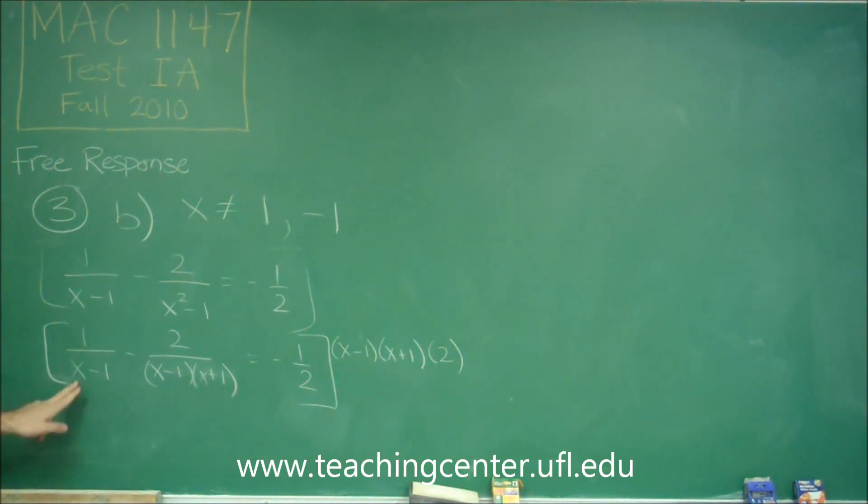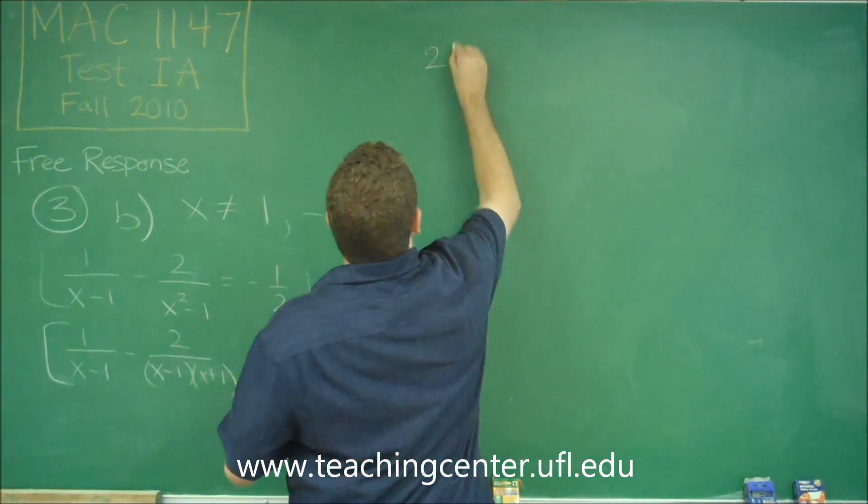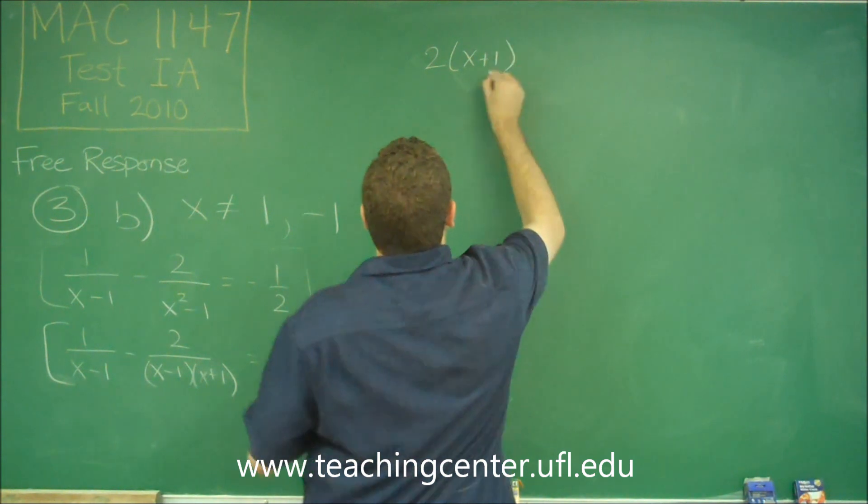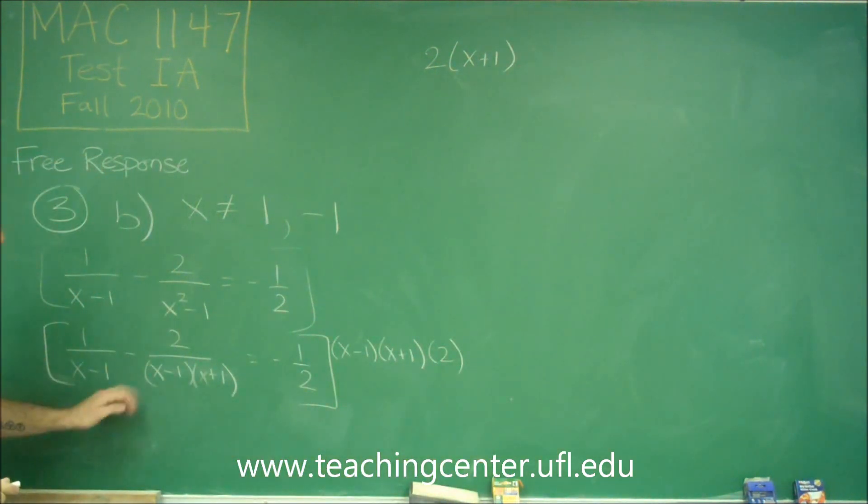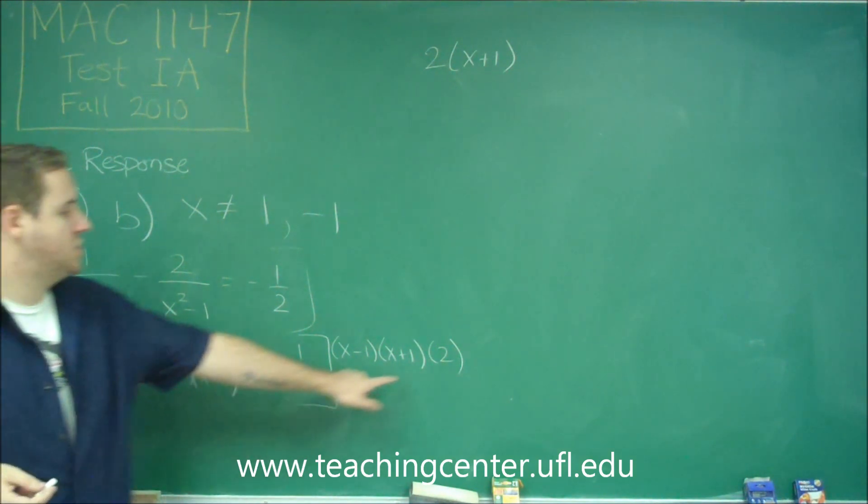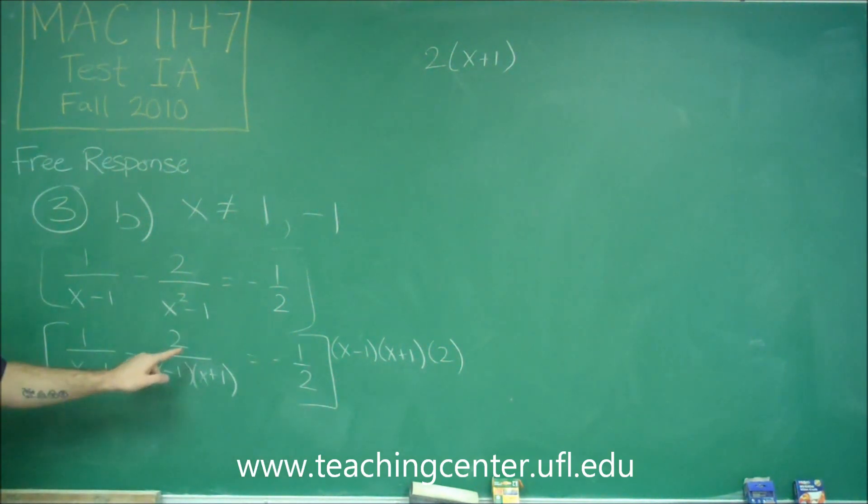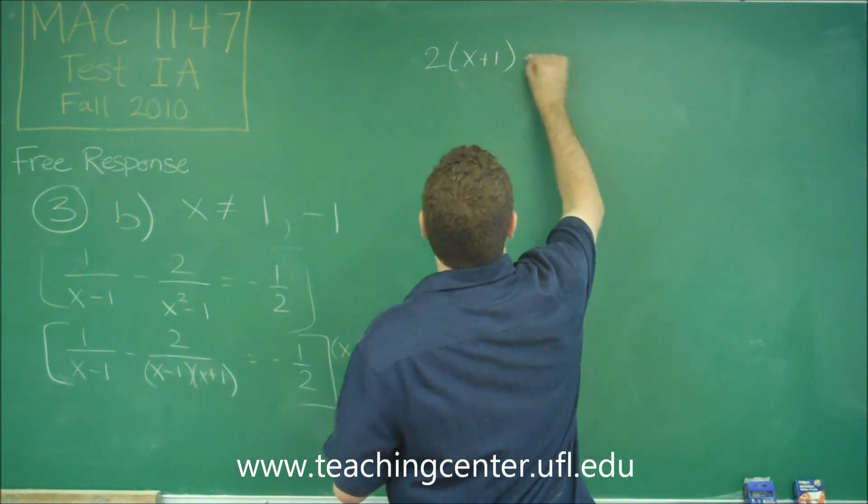So this first term, the x minus 1 will cancel out, but we'll be left with a 2 times an x plus 1 times this 1, so we'll have 2x plus 1 for this first term. In the second term, the x minus 1 and x plus 1 will cancel these out, and we'll just be left with this 2 times this negative 2, so we'll get a minus 4.